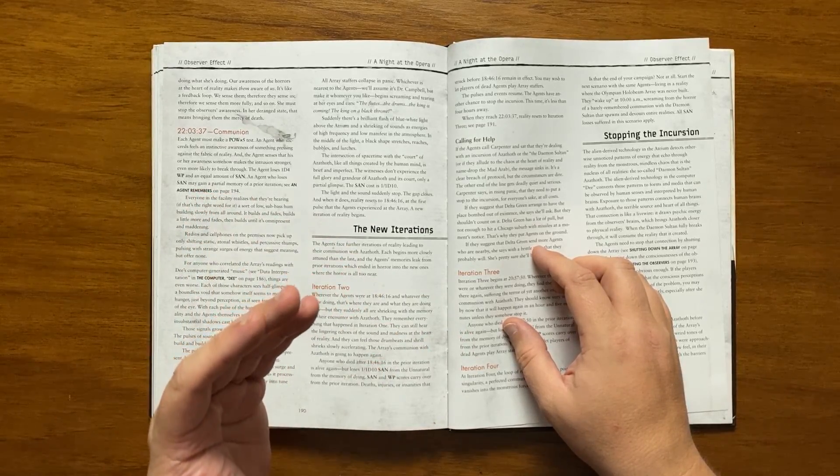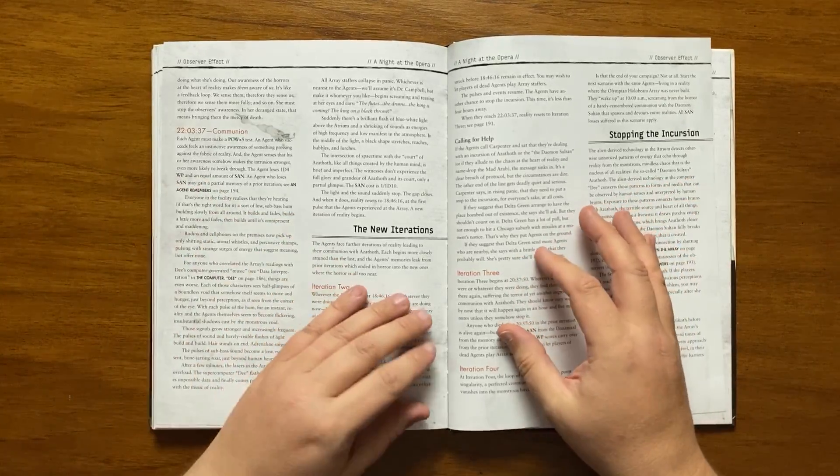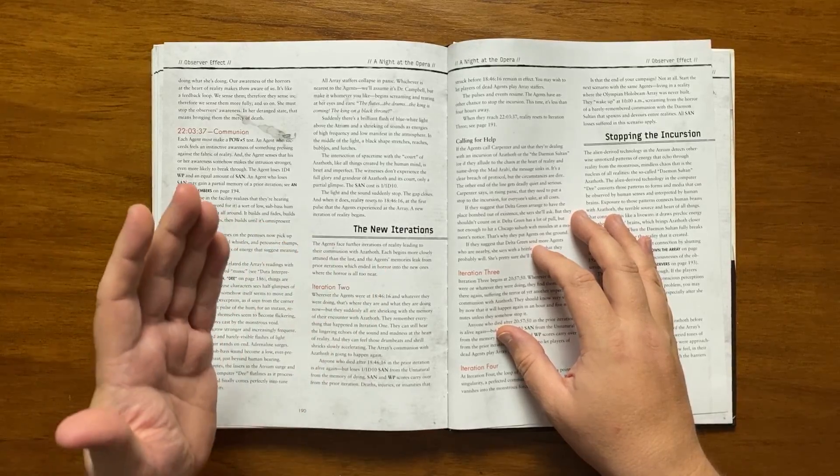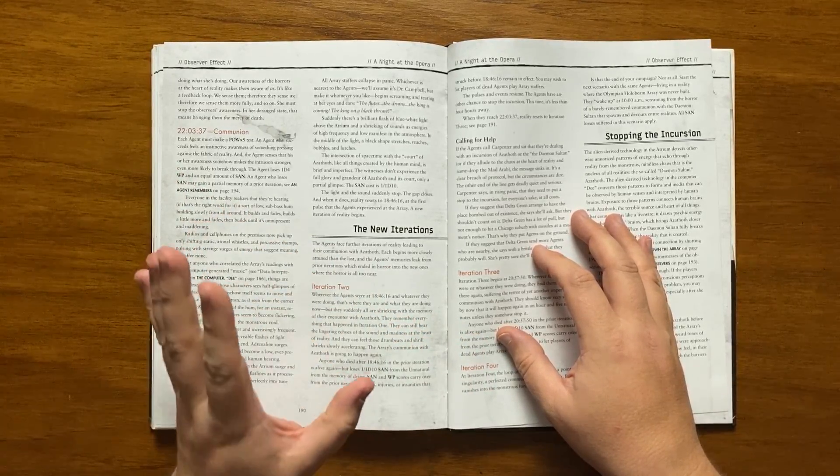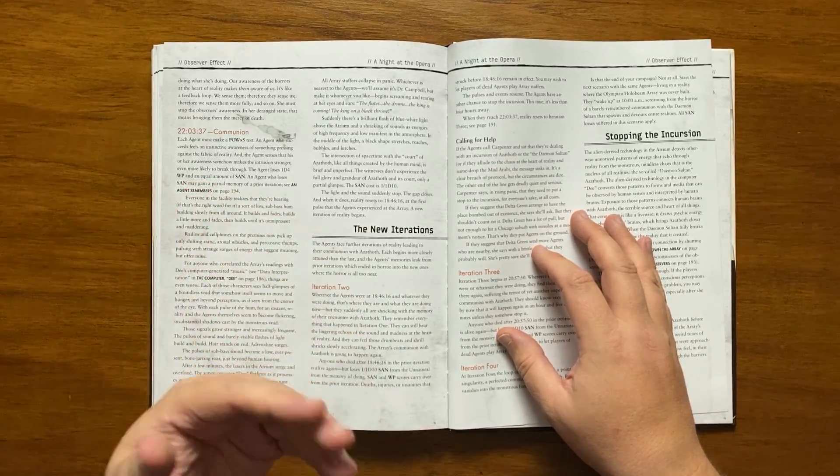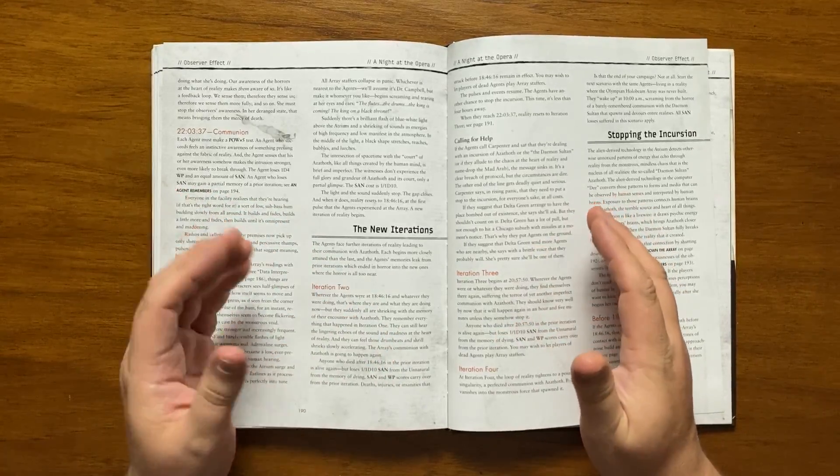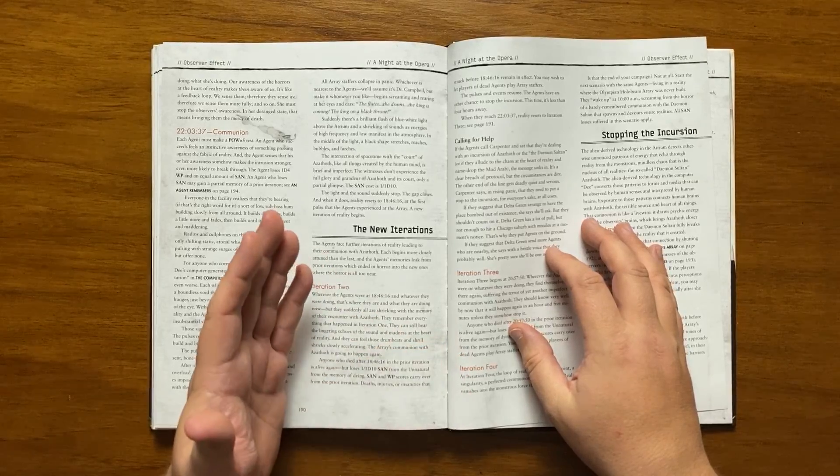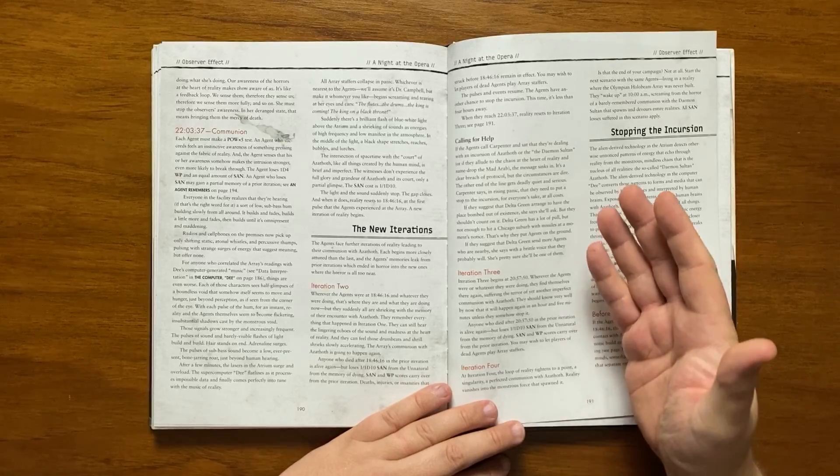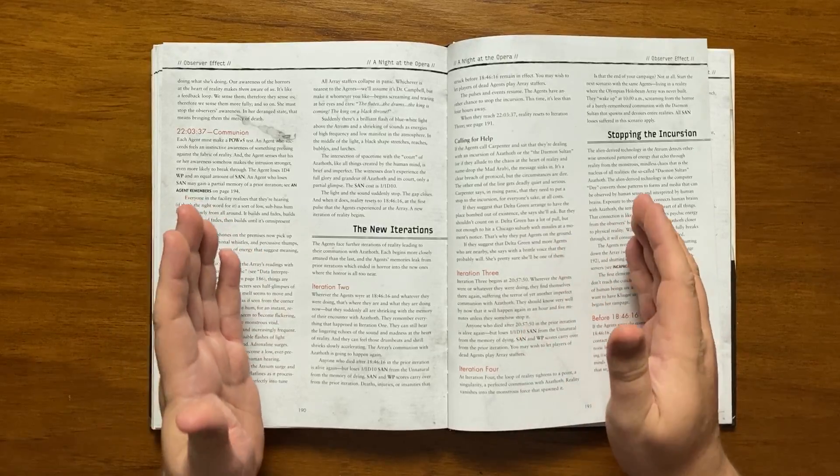There's a sudden flash of light above the atrium and shrieking sounds of energies manifest and in the centre of the light, a black shape unfurls, bubbles and lurches. This intersection with the court of Azathoth is imperfect and brief and all present do not witness the demon sultan in his full glory but still lose sand. Then it all stops and another iteration of reality reset and it goes back to 1846. With each iteration the agents become more attuned to the last one and their memories from the iterations that were consumed with apocalyptic horror leak back through reality to their new iteration. The second iteration has reality resetting to whatever they were doing in 1846 with everyone shrieking from the memory of Azathoth and then they remember everything that happened and even still remember the sound of madness still feeling the drumbeat.